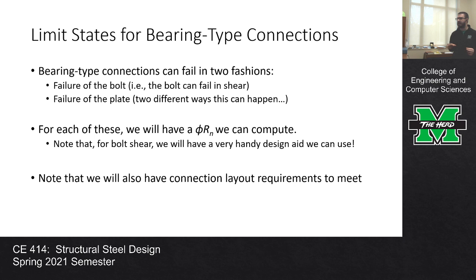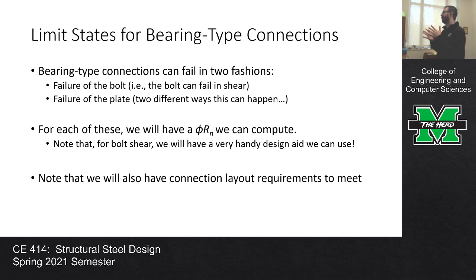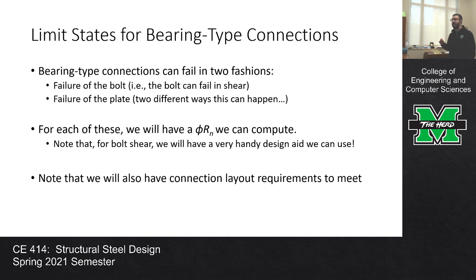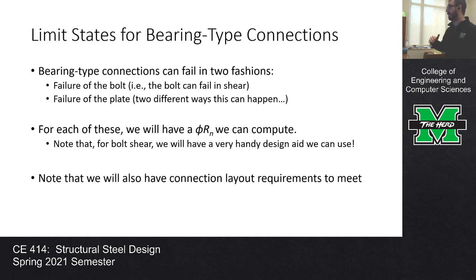Let's talk about the specifics of bearing-type connections. They can fail in two fashions: either the bolt fails in shear, or the plate fails. When I say plate, it could be just a flat plate, the web of a C-shape, or the flange of a W-shape — I'm using the term generically. For each of those, there's a phi*Rn we compute: a phi*Rn for bolt shear and a phi*Rn for bolt bearing. We take whichever governs — the minimum.